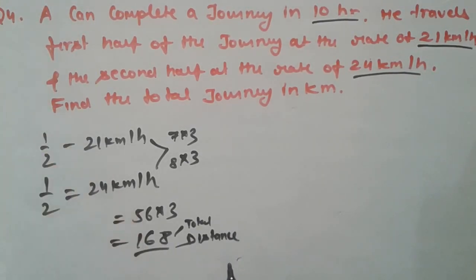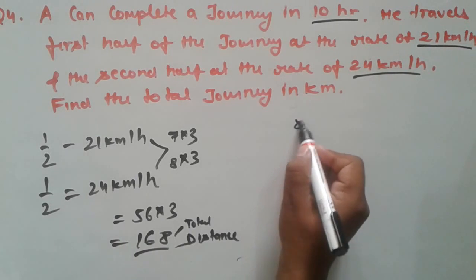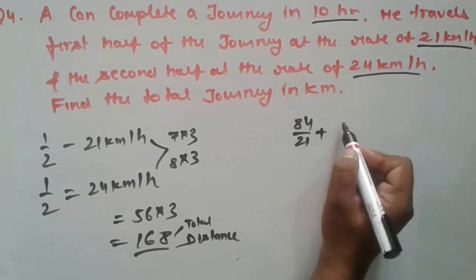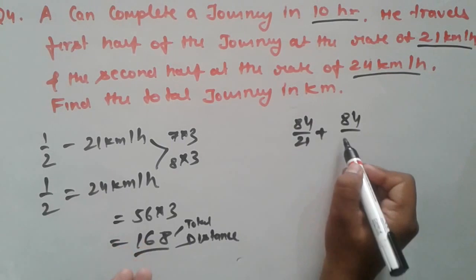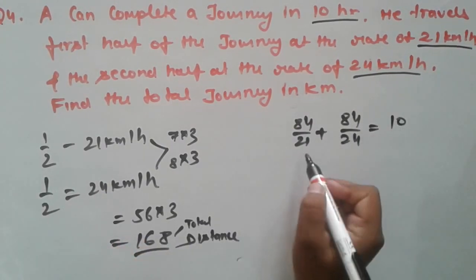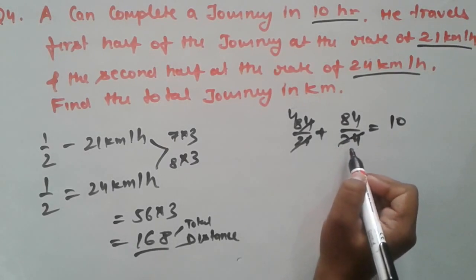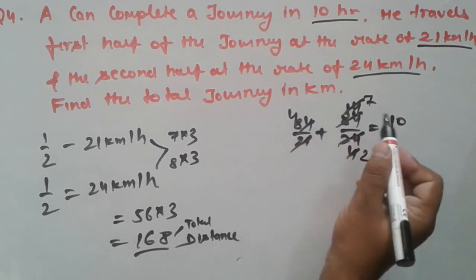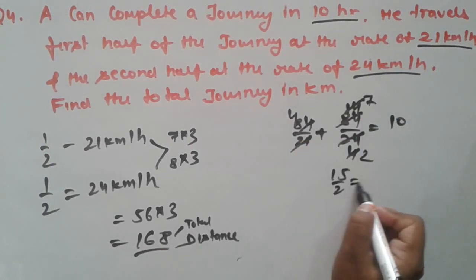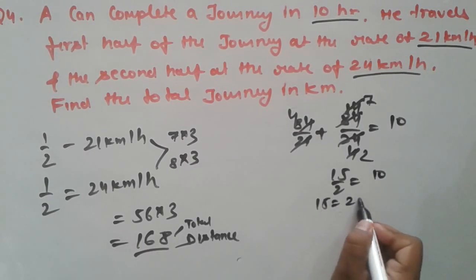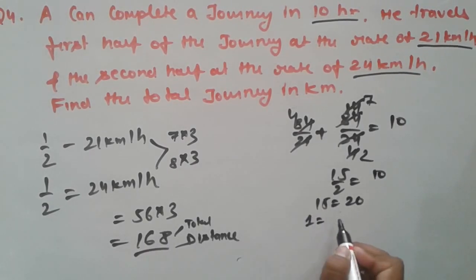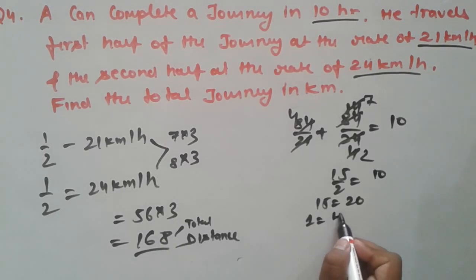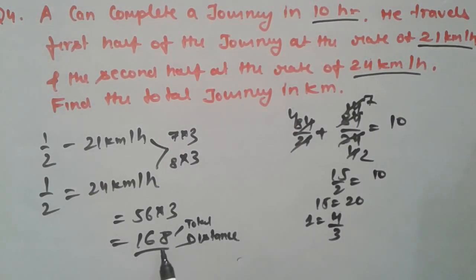Total time taken is 10 hours. The first half is 84 km at a speed of 21 km/h, and the remaining half is also 84 km at a speed of 24 km/h. So 84/21 + 84/24 = 10. This gives 4 + 7/2 = 4 + 3.5 = 15/2 = 10. So 15 = 20, meaning the value of 1 unit equals 4/3. Our total assumed distance is 168 units.